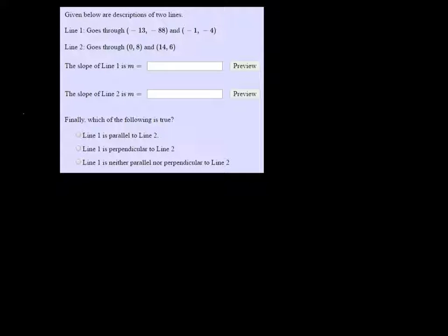In this one we have a line that's going through the points negative 13, negative 88, and negative 1, negative 4, and one going through 0, 8, 14, 6. We need to find the slope of each one.